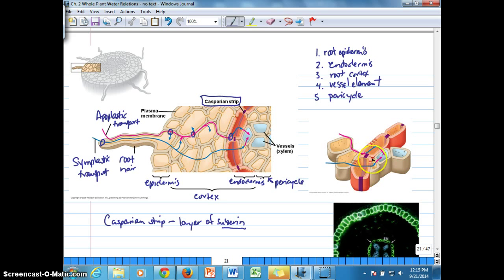In this blowup of the diagram, you can see suberin is found within the transverse walls here surrounding the cell. It's found within the radial walls of the cells, but the longitudinal walls here and here are open so that water can enter across the semi-permeable membrane at this point. We should be pointing out at this point here.